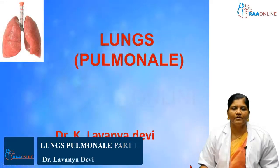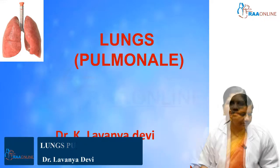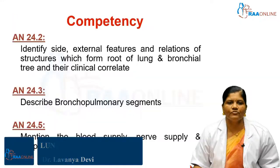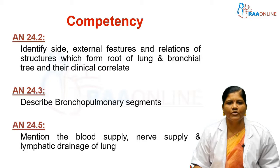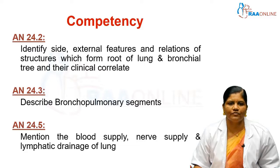Welcome to RAW Online. Today's topic of discussion is lungs. The competency of this topic is to identify the external features and relations of structures which form the root of lung and bronchial tree and their clinical correlates. Describe bronchopulmonary segments. Mention the blood supply, nerve supply and lymphatic drainage of lung.